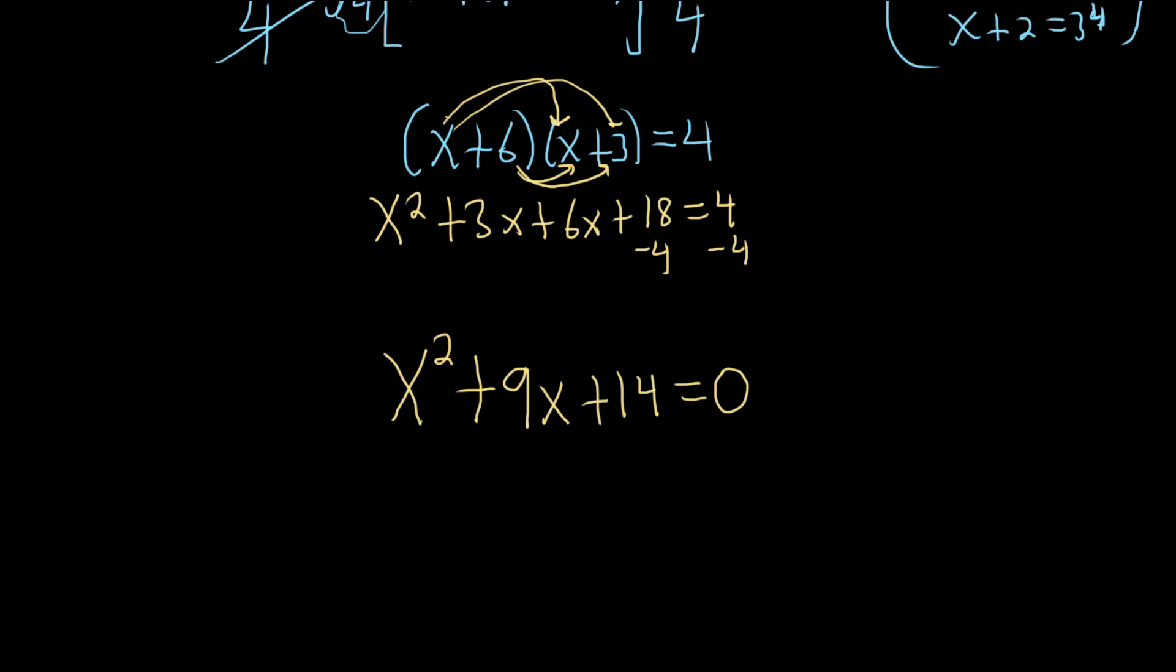Now comes the fun part. We have to try to factor this. This should factor. If it doesn't factor, that means you did it wrong. So let's see. x, x. This is equal to 0. So what multiplies to 14? Well, 2 and 7. Oh, and those add to 9. Pretty easy. So we just need a 2 and a 7.